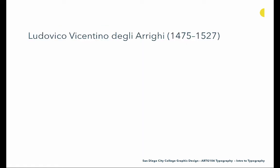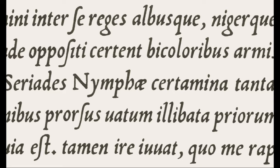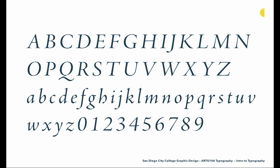Then we have Ludovico Vicentino degli Arrighi, also in Italy, who created some of the most beautiful and consistent italics we've seen. His ability to keep the angle and stroke weight consistent was unparalleled, and he was really known for his italics and their beauty. They were adopted by Slimbach for his version of Adobe Jensen, since the initial Jensen typefaces didn't have an italic — he used Arrighi's beautiful italic work as the basis for Jensen's italic.